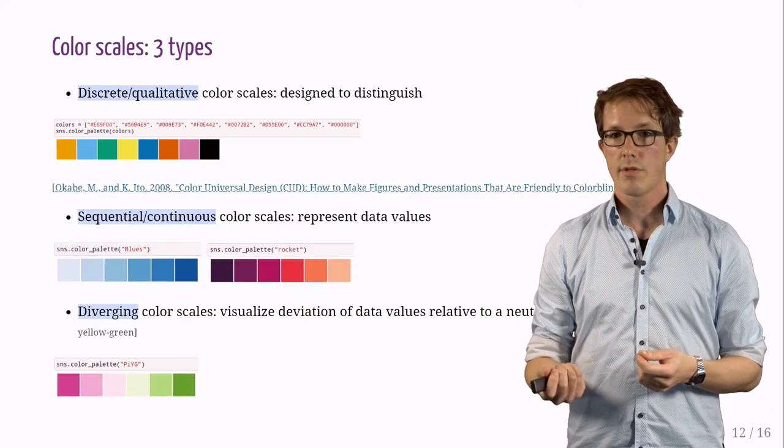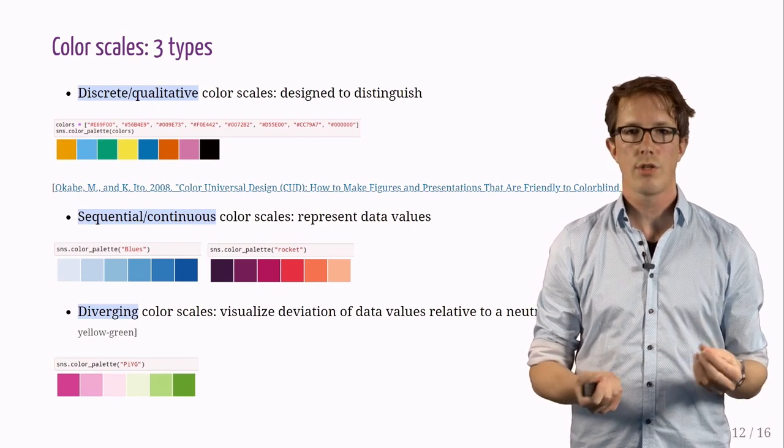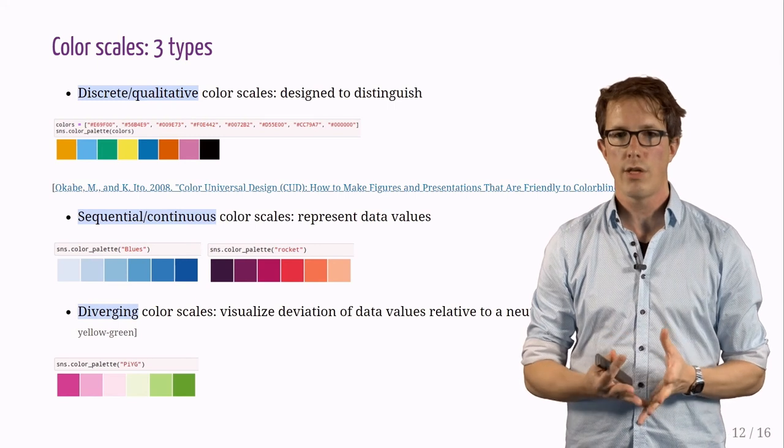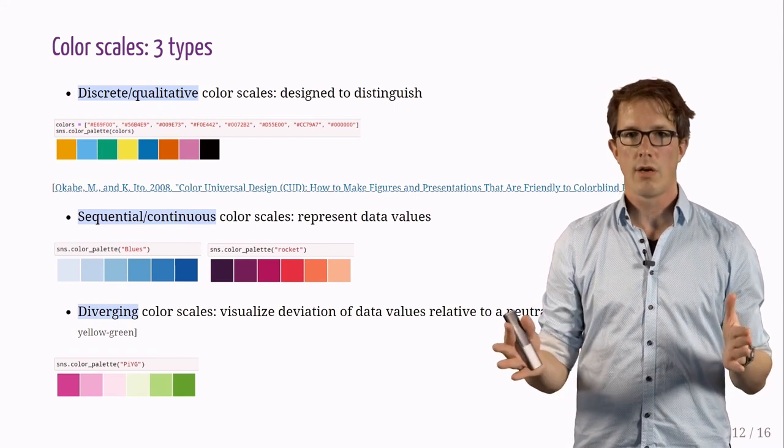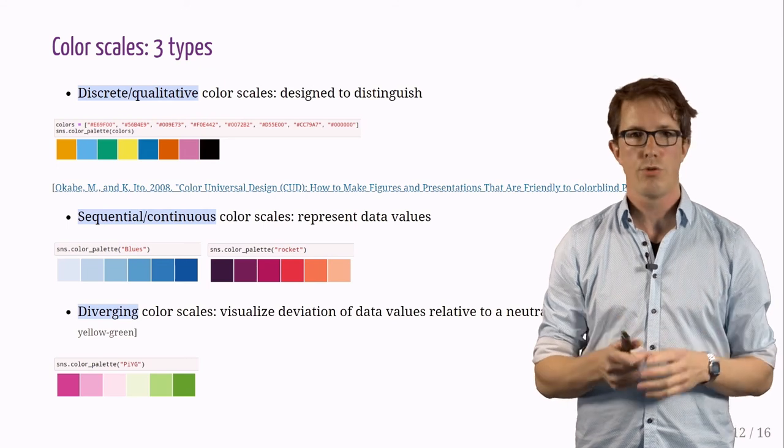There are at least three types of color scales. Discrete, they are designed to distinguish. Continuous scales, they are designed to represent data values. And diverging color scales when we need to visualize deviation relative to a neutral point.